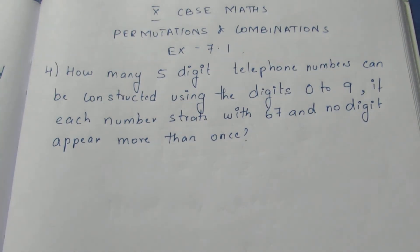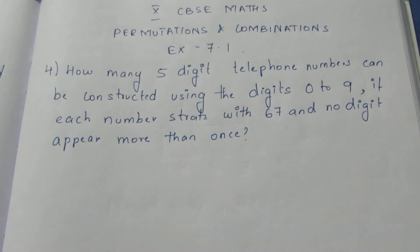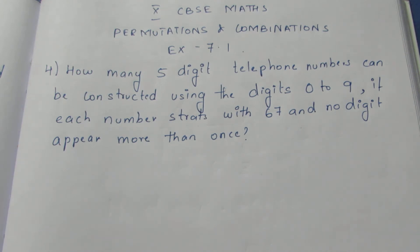Hello viewers, I am Eitli. Today we are going to see 10 CBSE marks permutation and combination exercise 7.1 question number 4. Let's see the question: how many 5-digit numbers can be constructed using the digits 0 to 9 if each number starts with 67 and no digit appears more than once.